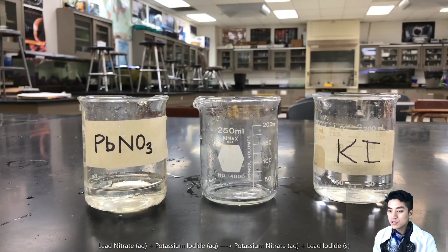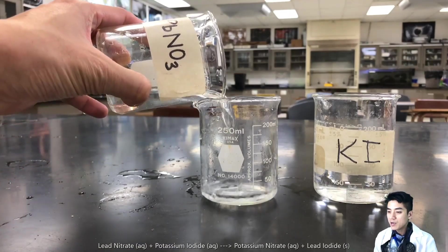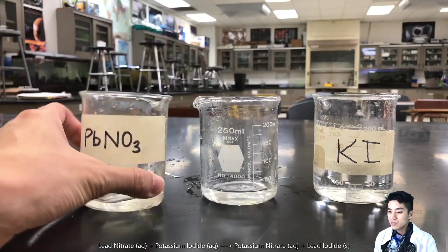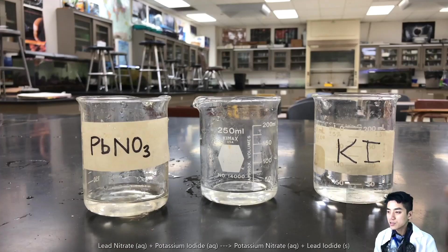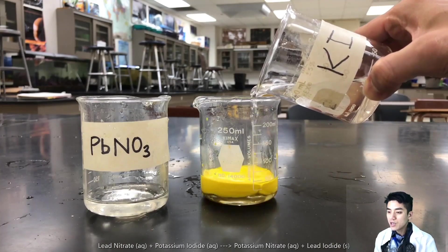Let's examine a double displacement reaction involving lead nitrate and potassium iodide. You can see here when we start they're both clear solutions, but as soon as they mix it forms a yellow precipitate.